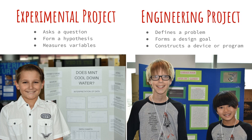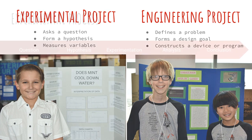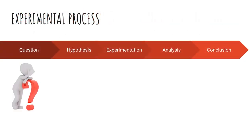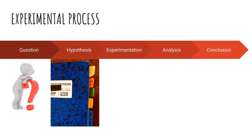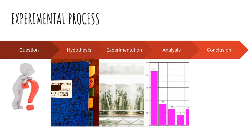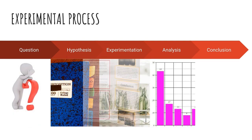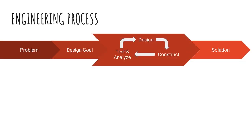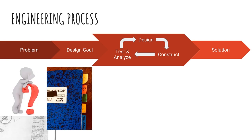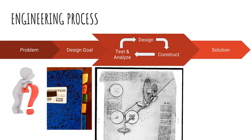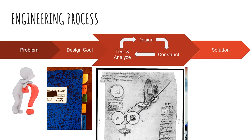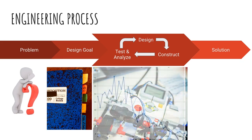While the process is similar, there are some major differences. Experimental projects start with a question that they can answer through the scientific method. Engineering projects start with a problem that can be solved by designing a solution and following the engineering process.